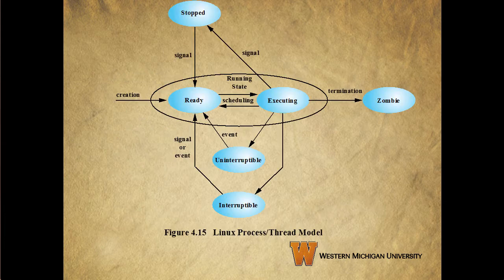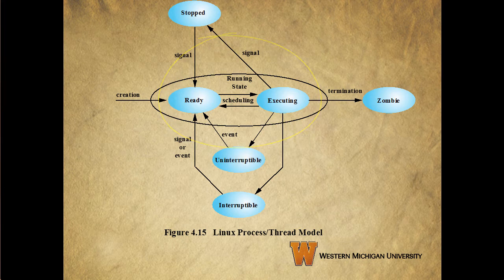This diagram shows the Linux process state model, which has a lot in common with our five-state process diagram from Chapter 3. In this case, something to pay attention to is that the ready and executing states are kind of lumped into a single running state. So when we're talking about Linux, when we mention the running state, we're actually talking about both the ready and executing state — the running process is either executing or it's ready to execute.